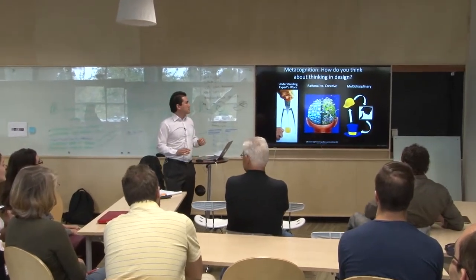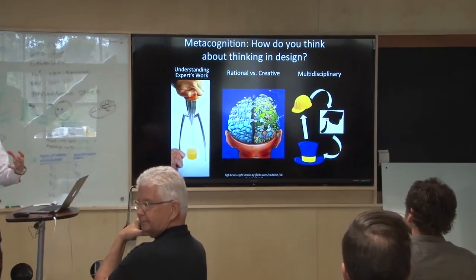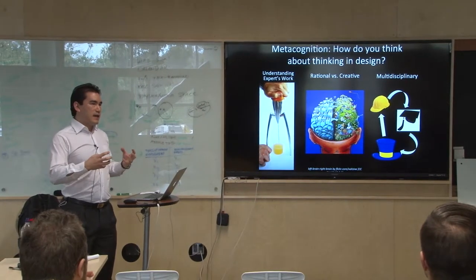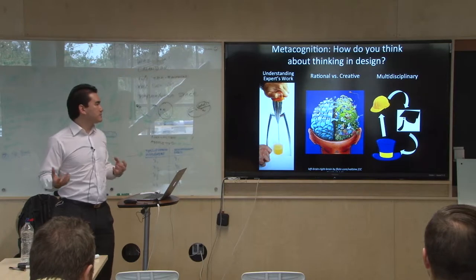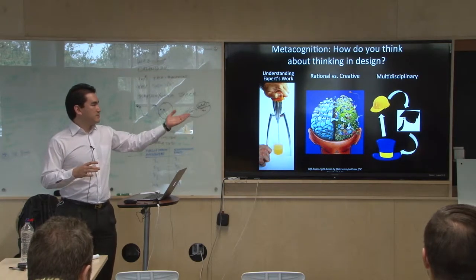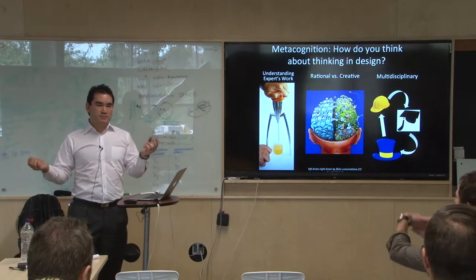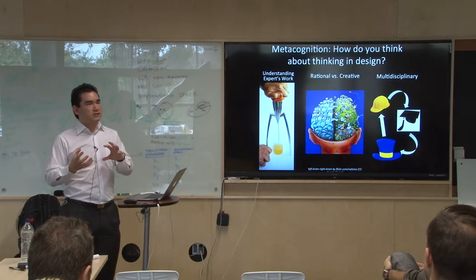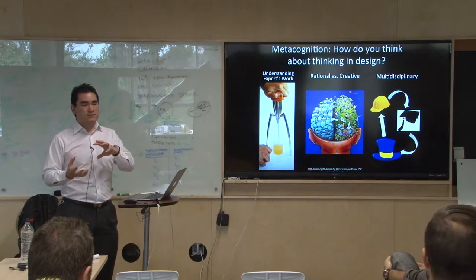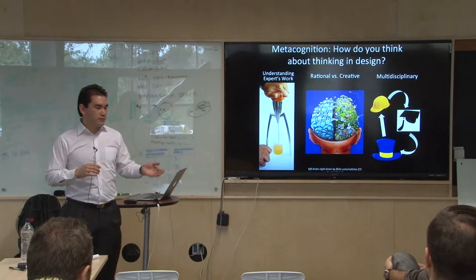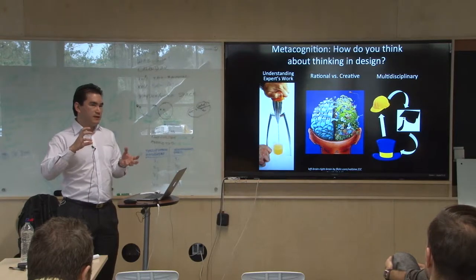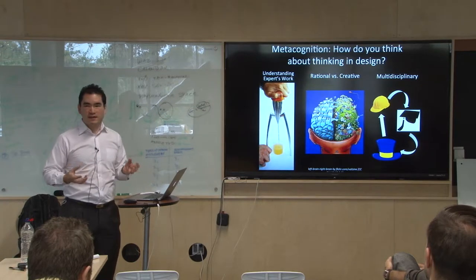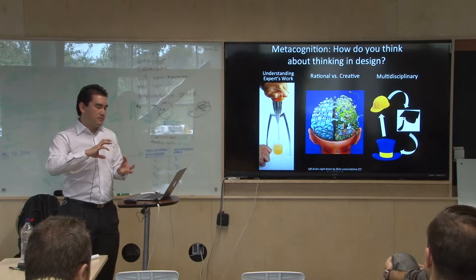The underlying question driving this presentation is: how do we think about our thinking in design? In terms of advancing design as a discipline, there's value in seeing how experts solve problems and understanding what makes an expert designer. In terms of multidisciplinary collaboration, thinking about what kinds of thinking different disciplines bring and how those can complement each other productively. Also thinking about the relationship between rational and creative thinking — in modern products like computers, much of the value comes from creative design, but they are also technical artifacts with very intense systems engineering and requirements that need to mesh together coherently.